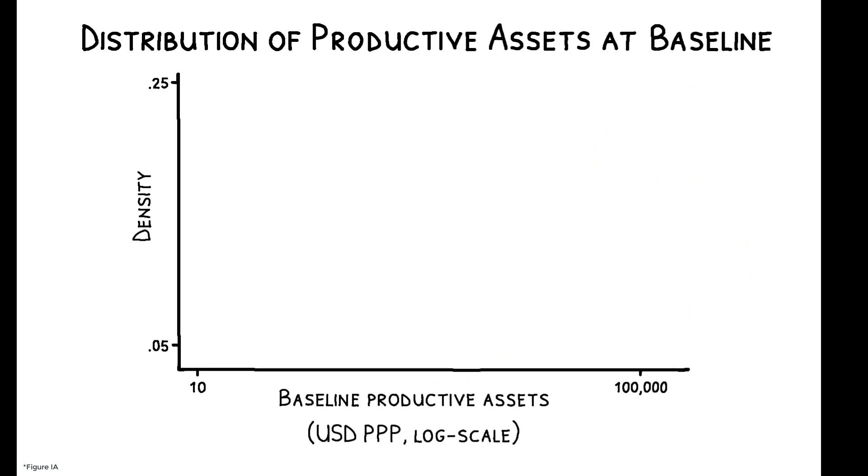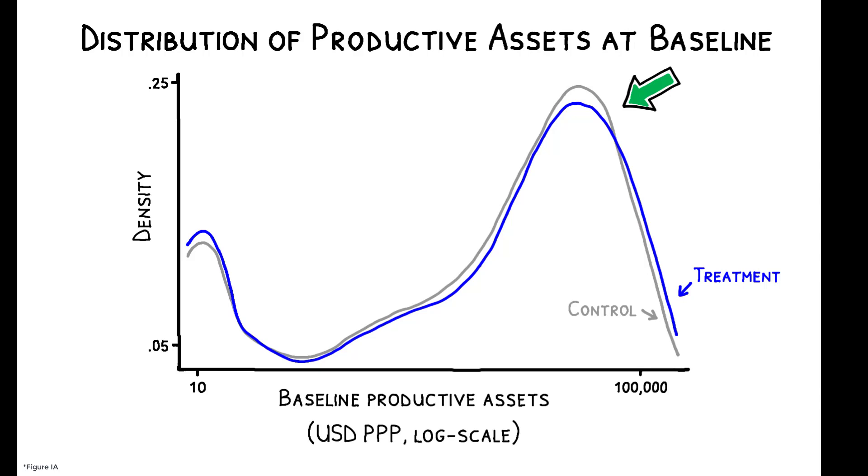To provide context, this figure shows that the baseline distribution of assets in both treatment and control villages is bimodal. Households in this setting either own a lot of productive assets or have almost none.